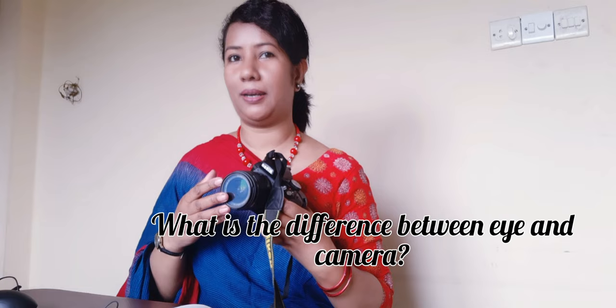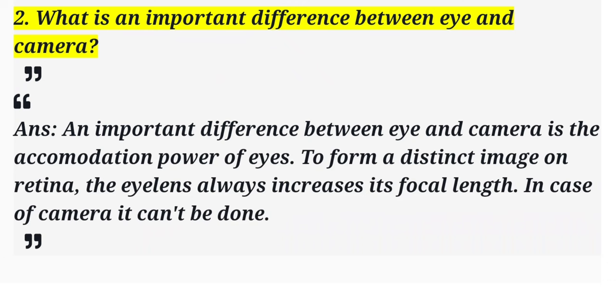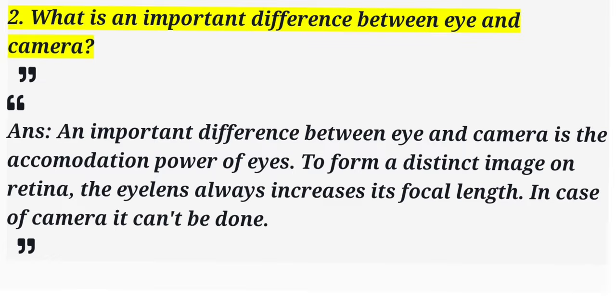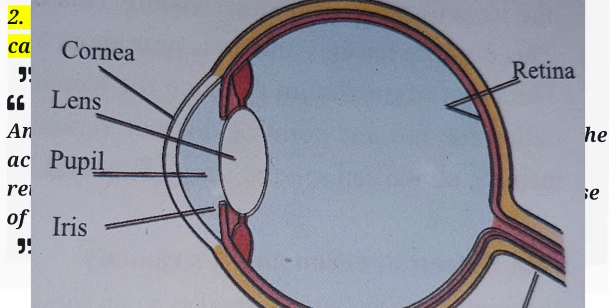Now I'm going to talk about what's the difference between eye and camera. Here are different types of lens, and also the eye has different types of lens. So what's the difference between camera and eyes? An important difference between eye and camera is the accommodation of power of the eyes — to refer to a distinct image on the retina.